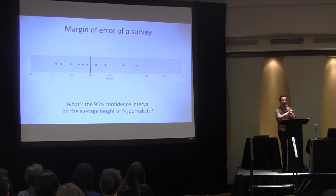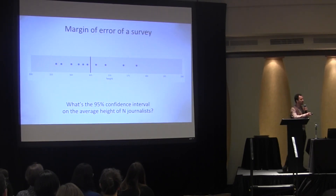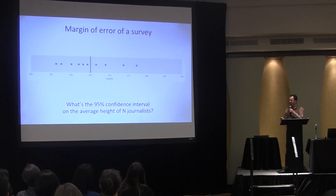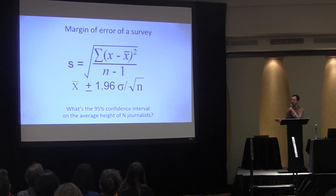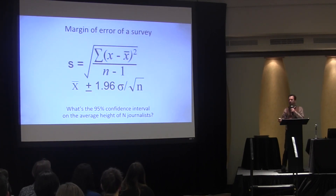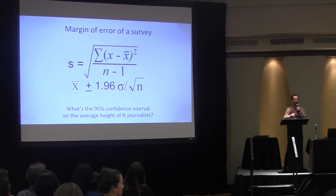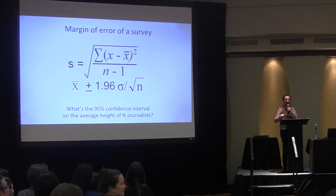Let's say we want to find the average height of journalists. You all know how to do this. We take a sample, we take the average of that sample. Now, what is the margin of error? You've all seen this formula. Should we use this formula? Who in the audience is prepared to explain this formula to us tonight? Who can derive it with confidence? You, sir?